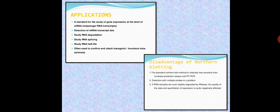The limitations of Northern blotting are: first, PCR — polymerase chain reaction — has replaced Northern and Southern blotting due to its more precise and advanced technologies. Second, detection with multiple probes is a problem; only a single probe can be used and we cannot use multiple probes simultaneously. These are the certain limitations of Northern blotting. In the next lecture, we will discuss our last blotting technique, that is Western blot. Thank you.